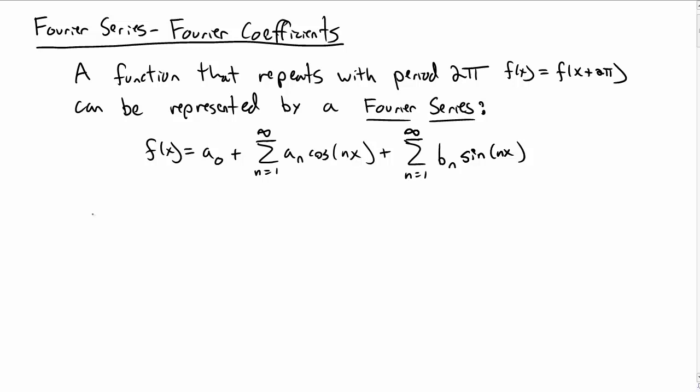Let's talk about where the Fourier coefficients come from in a Fourier series. So let's consider a function that repeats with a period of 2π, and we know we can represent that by a Fourier series with a constant term, a sum of cosine terms, and a sum of sine terms in general.